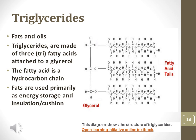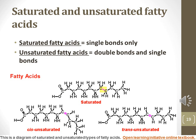Triglycerides are fats and oils and they are named for having three fatty acid tails attached to a glycerol molecule. Fats and oils are the primary method of energy storage by organisms. They also serve as insulation and cushioning — think about the fatty blubber layer that insulates whales. Saturated fats contain only single bonds on the fatty acid tail. Unsaturated fats contain at least one double bond. If the hydrogens attached to the double-bonded carbons are on the same side, the molecule is cis unsaturated. If the hydrogens are on the opposite sides of the chain, the molecule is trans unsaturated.